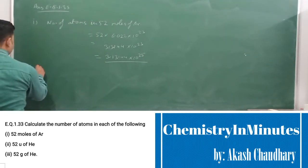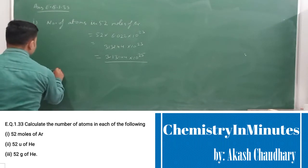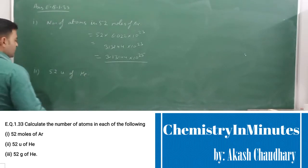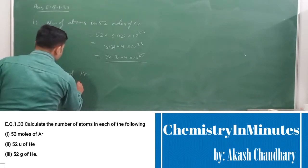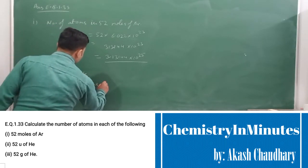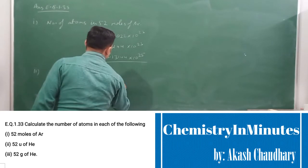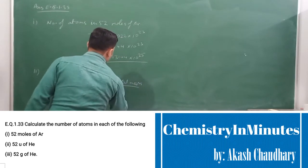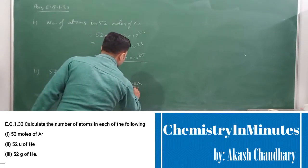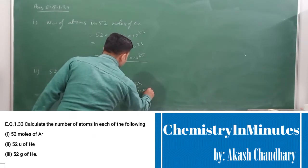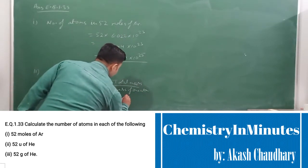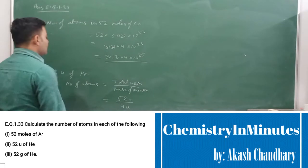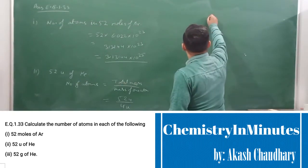Now the second part is 52 u of He. Here we can find the number of atoms equal to total mass divided by mass of 1 atom. Total mass is 52 u and mass of 1 atom of helium is 4 u. So this will come as 13 atoms.